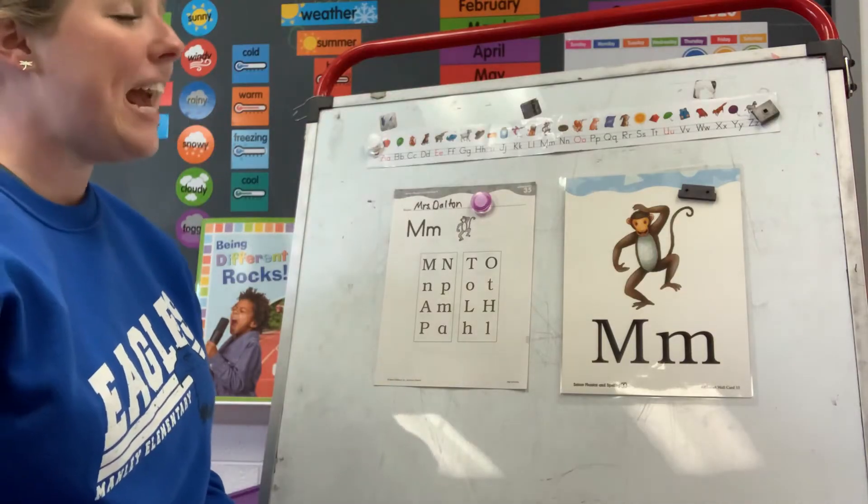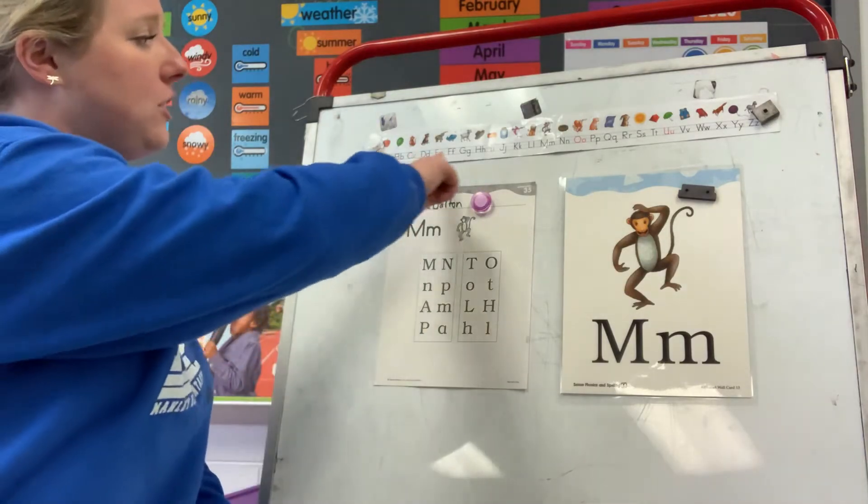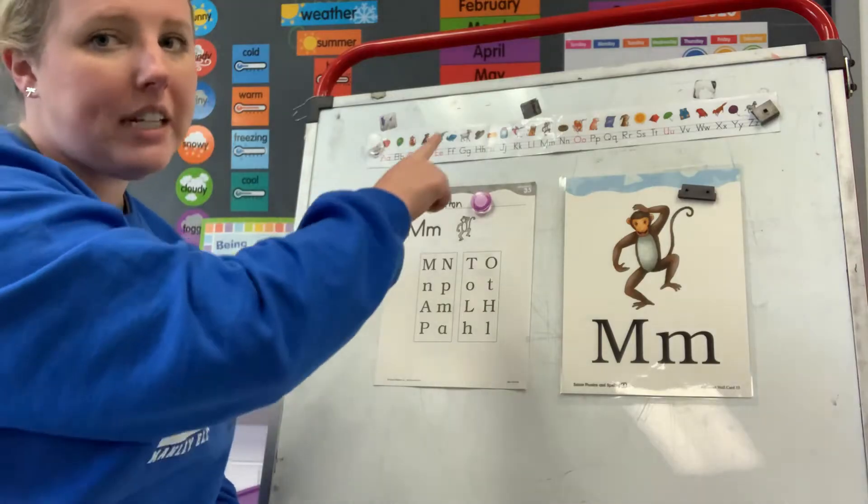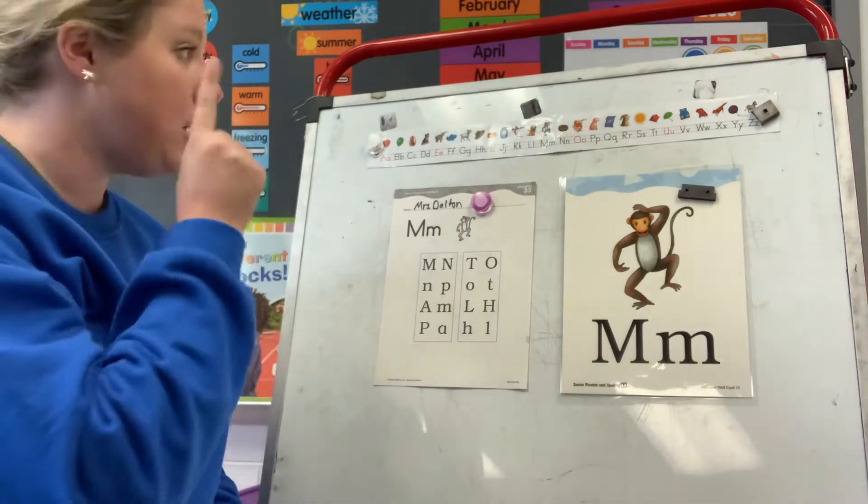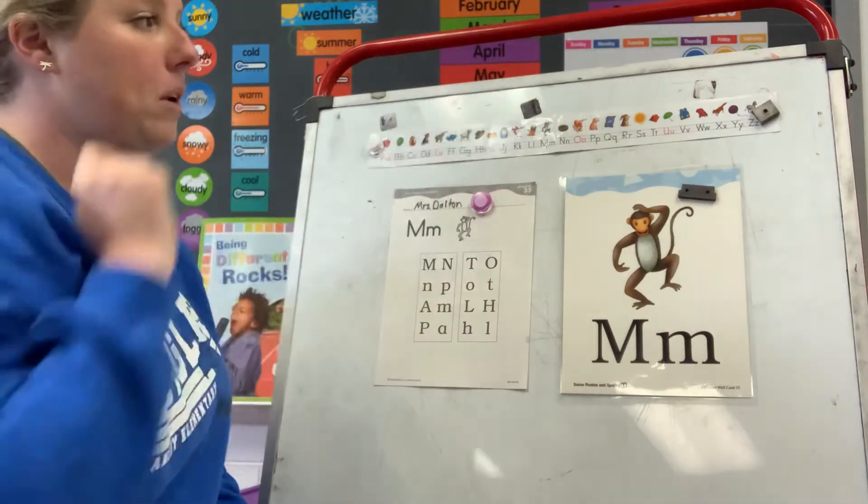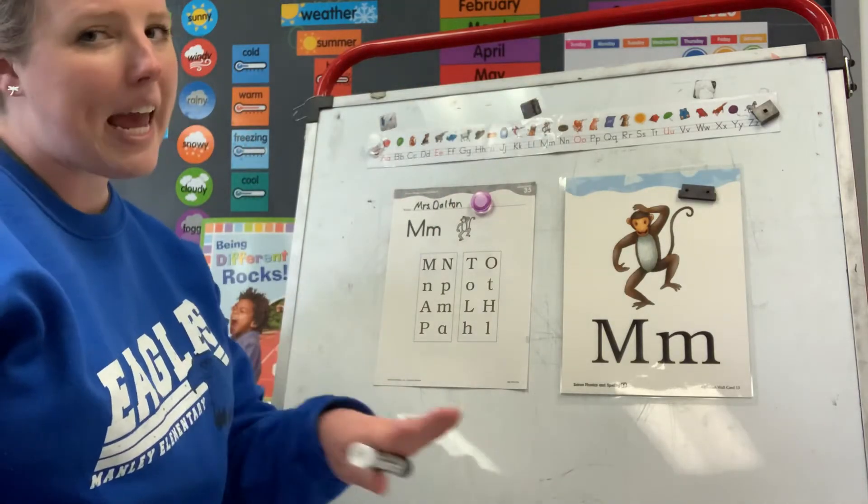Now, we're gonna say our alphabet today. We're not going to track, unless you need to. If you still need to touch the letters and say them, you can. But I would like for you to try just to use your eyes and follow along as you say the alphabet. We're just gonna say it normal today.